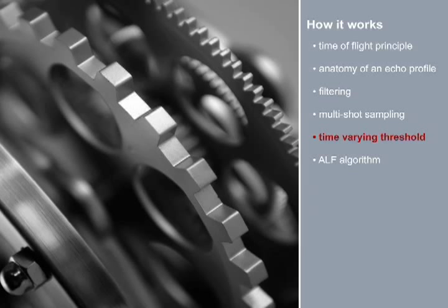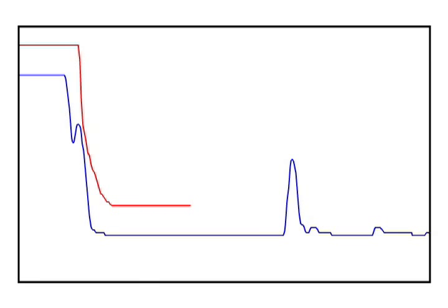TVT, time varying threshold. The dynamic TVT or time varying threshold curve is a mathematically constructed curve to help select the true material echo. The position of the TVT above the echo profile is determined by the height of the echoes above the noise floor.